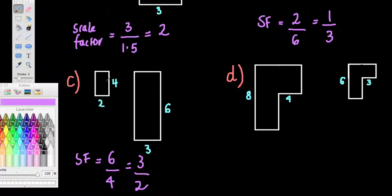So the scale factor for this pair of rectangles is 3 over 2, so like 1 and a half. We're basically multiplying this by 1 and a half to get the larger rectangle.